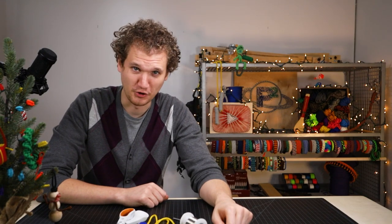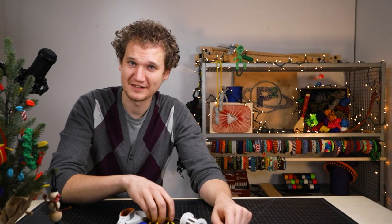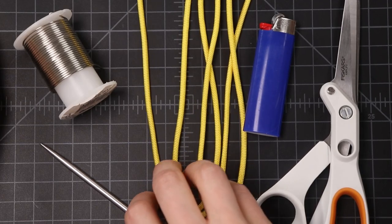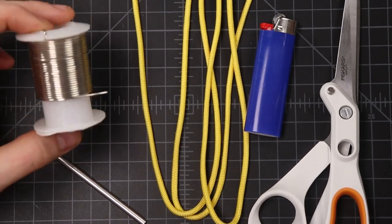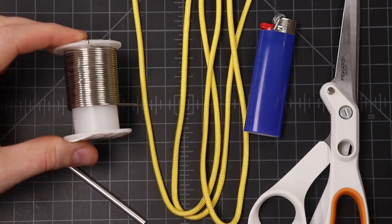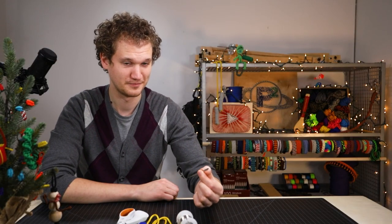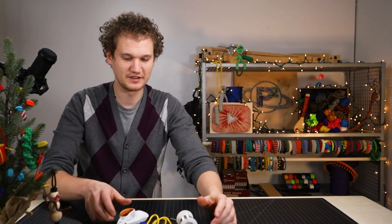For this abysmal paracord project, you'll need about five feet of any color paracord. We're using color yellow, so we can use it as a topper for our tree. About a foot of 16-gauge craft wire, and a type 3 FID.